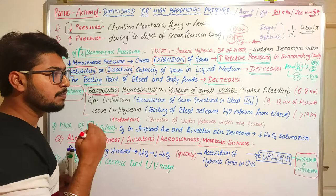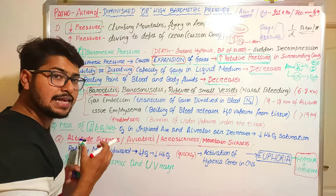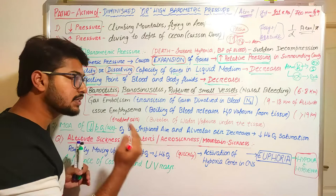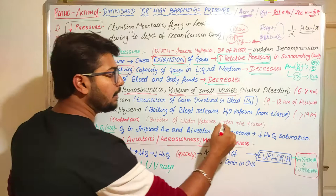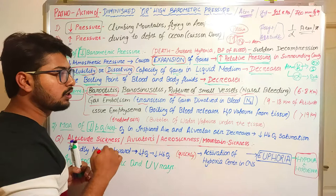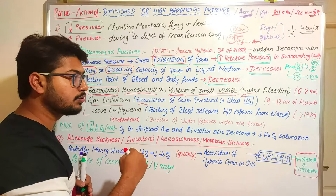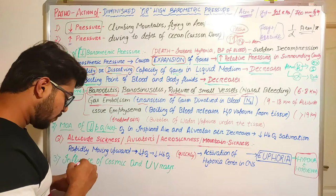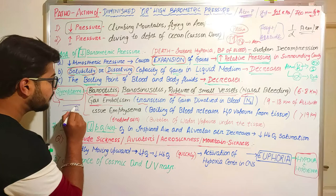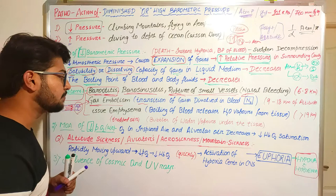The rupture of small vessels takes place because the small vessels have less resistance towards the expansion of gases. The vessels carry soluble gases like oxygen, carbon dioxide, and nitrogen, which will try to escape from the small vessels, leading to rupture and hemorrhage. Next, there will be gas embolism: as solubility decreases, the nitrogen or other gases already dissolved in the blood will try to escape, forming air bubbles inside the vessels that block the pathways and cause gas embolism.